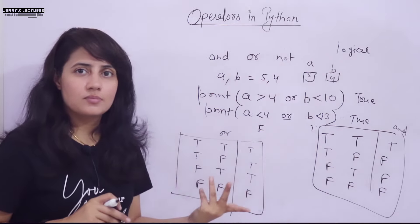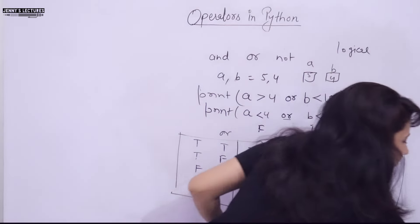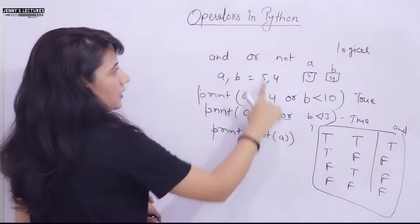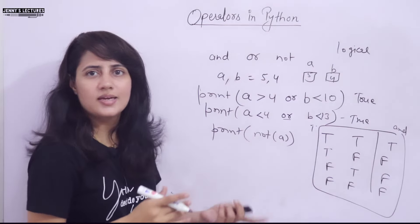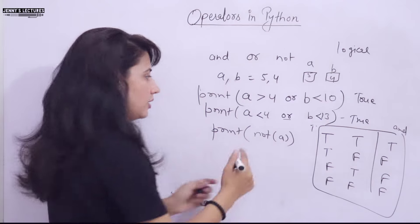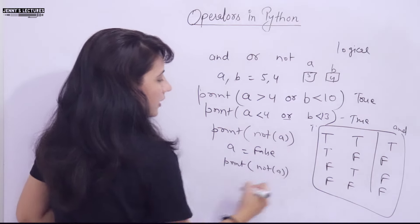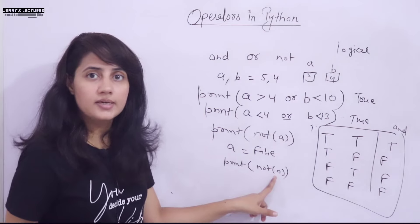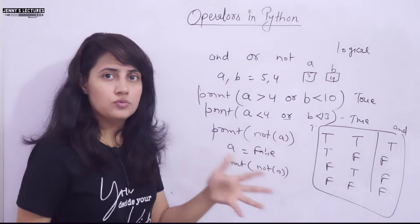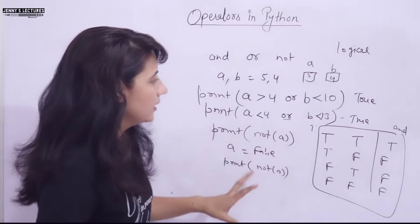The third logical operator is NOT. It will reverse the result. For example, if I print not a, where a is 5 — any non-zero value is considered True — so a is True, and not a will give False. If I write a = False and print not a, the reverse of False is True, so it will give True. Logical NOT simply reverses the result.